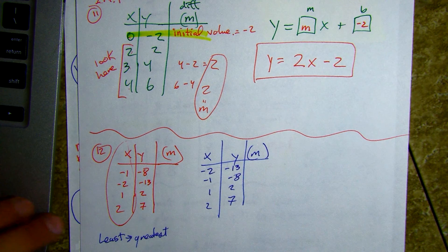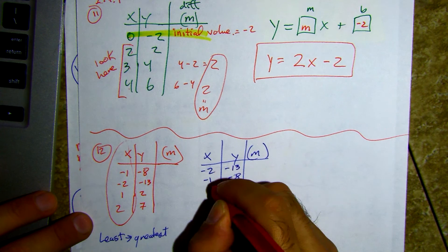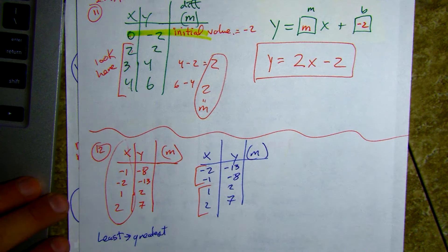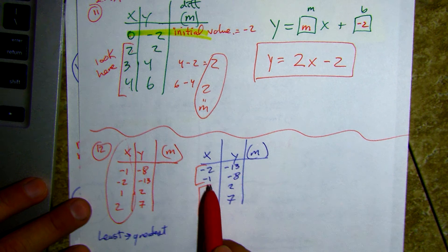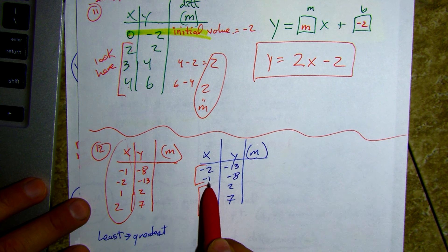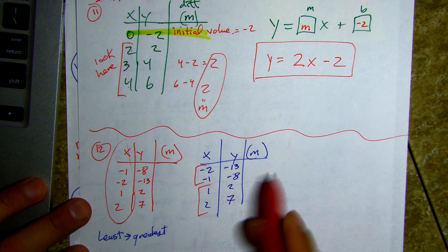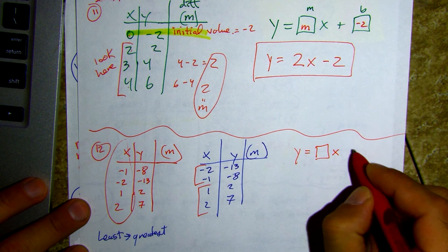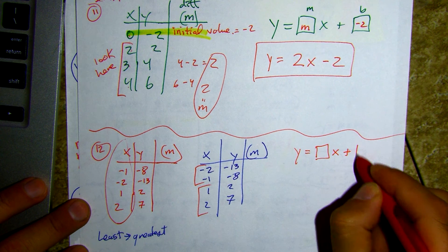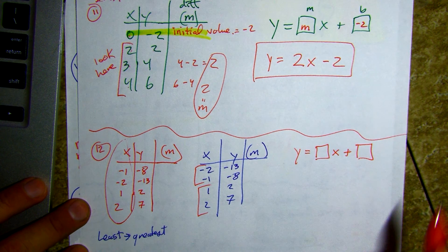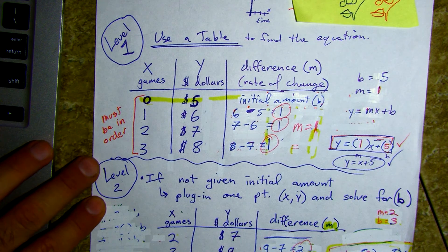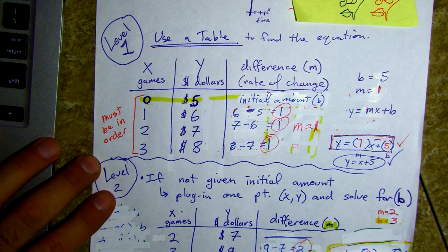Let's look at both of these segments because we're missing zero — we can't find our initial amount. We're going to plug in what we can find and then probably have to use a point to find the other one. This is level two: if you're not given the initial point where x is zero, you've got to plug in a point and find your b value.